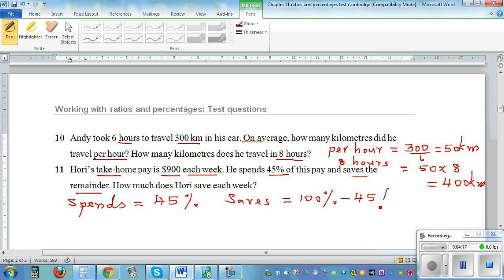So 100% is the total wage minus 45%. That is 100 take away 40 is 60, take away 5, so it's 55%. So you can see this is what he saves - he saves 55%. So how much does Hori save each week? He saves 55% of his pay.